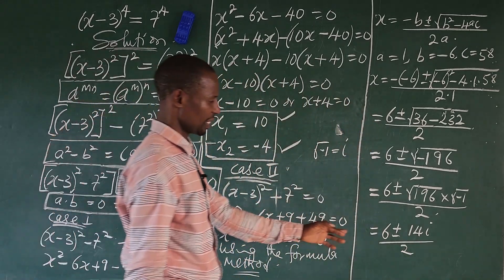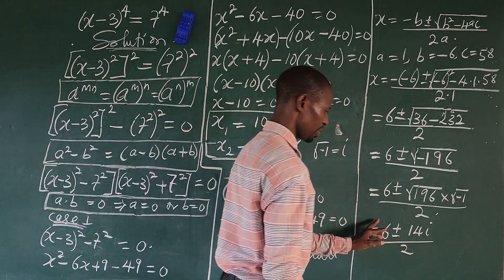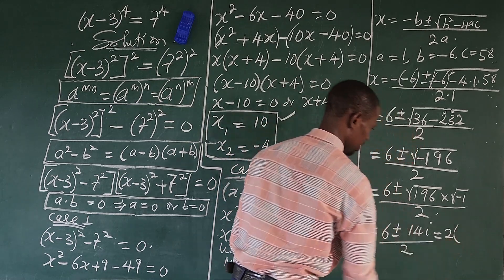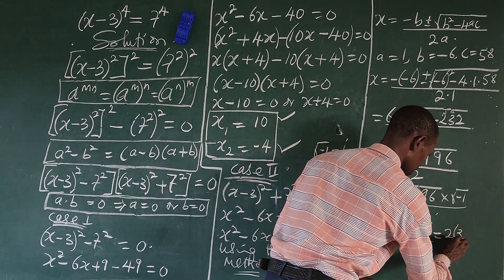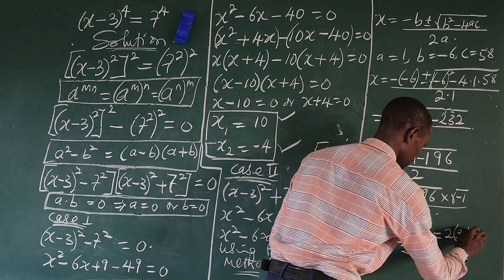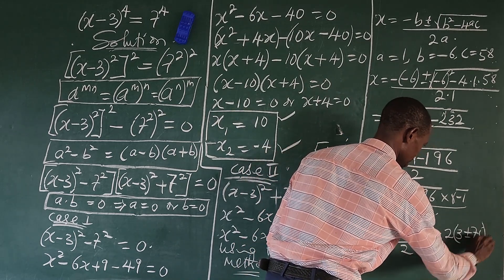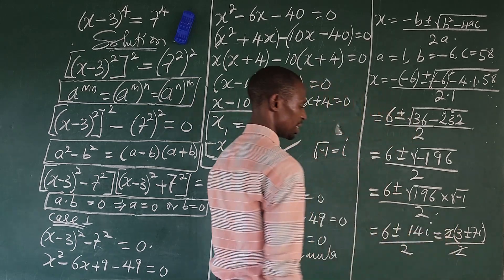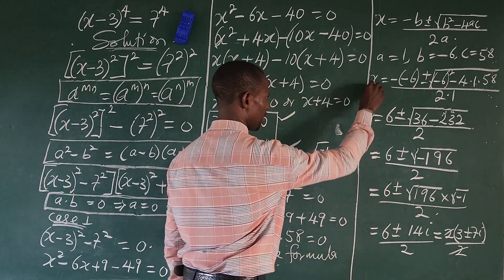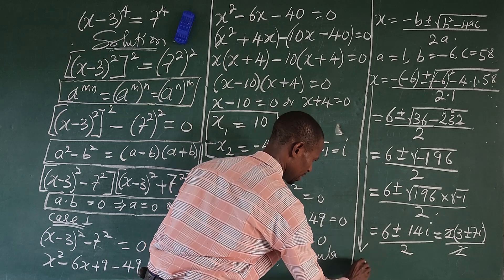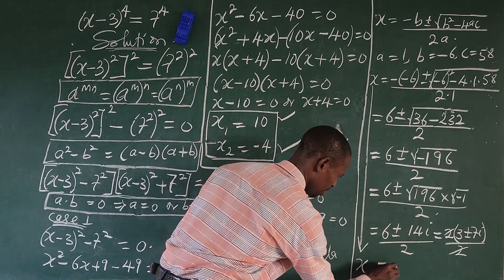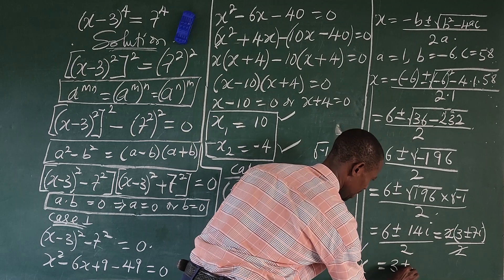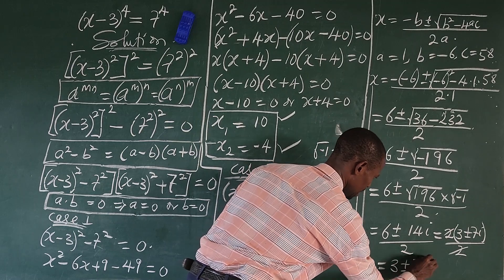Now look at what we have here. 2 can go into 6 to give 3, and 2 can go into 14 to give 7. So if we simplify, we're going to have 2 into 6 gives 3, plus or minus 2 into 14 gives 7i. So our x will now be equal to 3 plus or minus 7i.